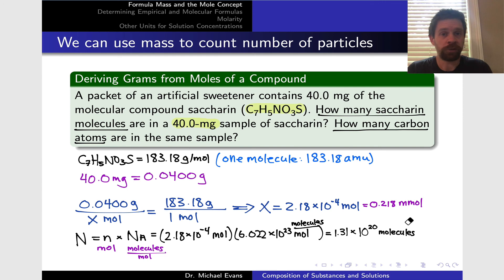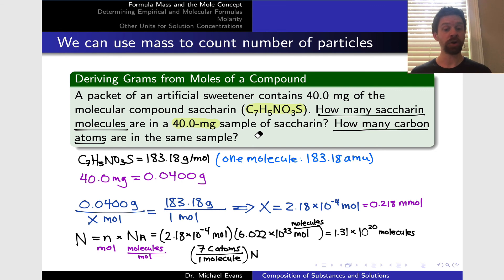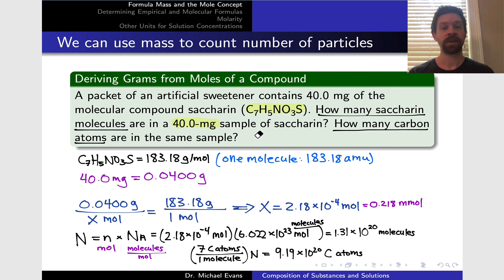We've answered the first question: how many saccharin molecules are in the sample? Now, what about the number of carbon atoms? We can think in terms of proportionality, realizing that for every one saccharin molecule, there are seven carbon atoms, since each molecule contains seven carbons. We take the number of saccharin molecules and multiply by seven carbon atoms per molecule. This gives 9.19 times 10 to the 20th carbon atoms — unsurprisingly a massive number of carbon atoms in a macroscopic sample of saccharin.